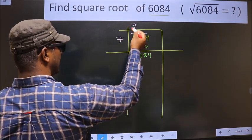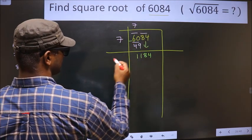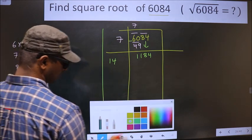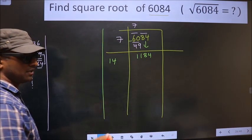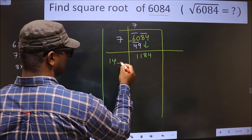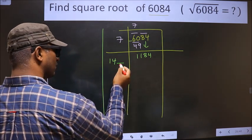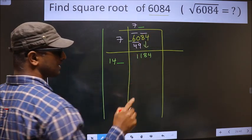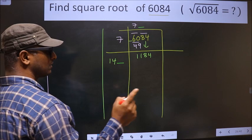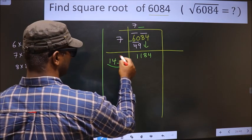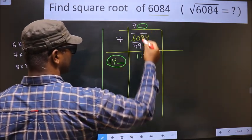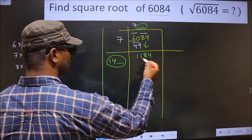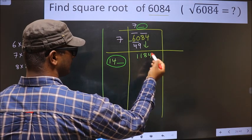Now we should add these two numbers: 7 plus 7 is 14. We need to write a number here — the condition is that whatever number we write here, we must write the same number there as well. And when we multiply this number by the full number formed, the result should be either equal to or close to 1184, but not exceeding it.